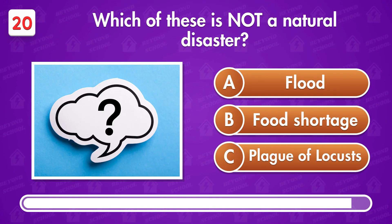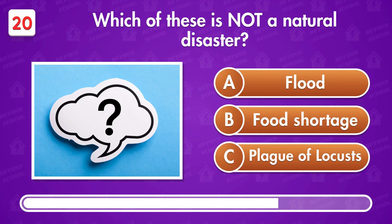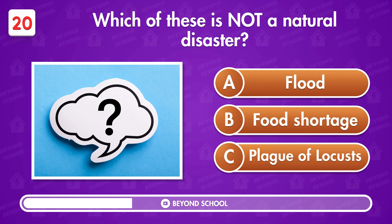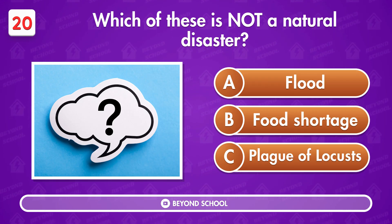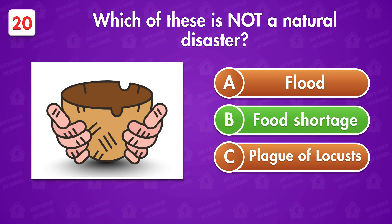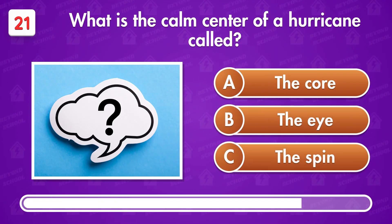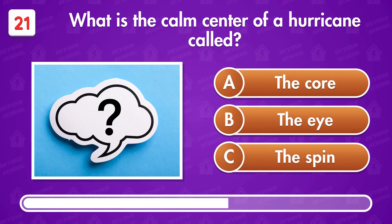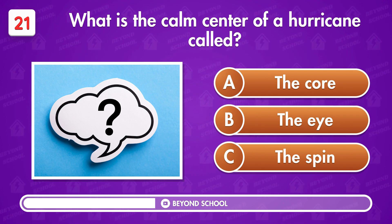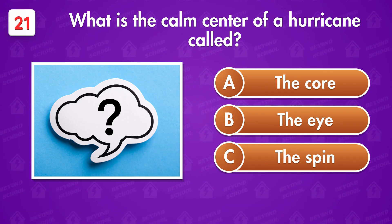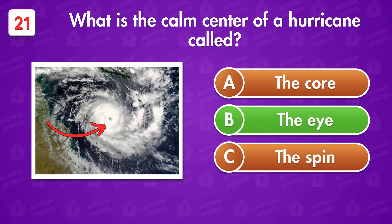Which of these is not a natural disaster? Food shortage. What is the calm center of a hurricane called? Option B is correct.